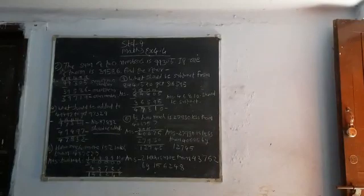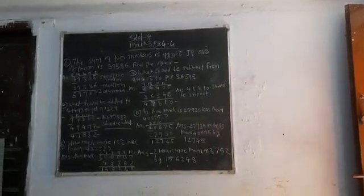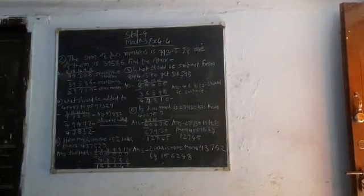So the answer is 1,56,248. 2 lakh is more than 43,752 by 1,56,248. This is our exercise 4.4 complete. Thank you.